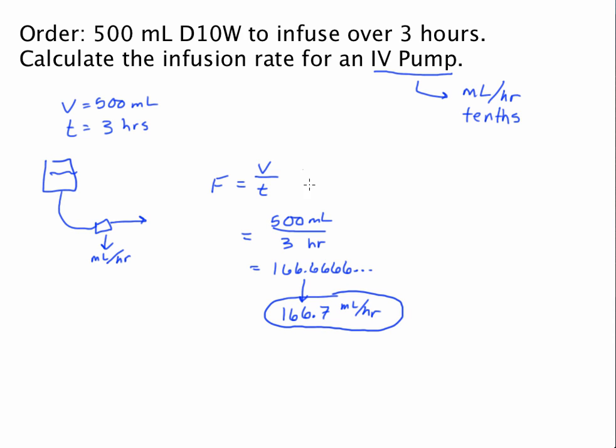Every problem involving infusion rate can be set up in a similar manner, and that is start with the volume that you're infusing and divide that by the infusion time. Sometimes you might have to change the unit, as we're about to see. Sometimes you may not.